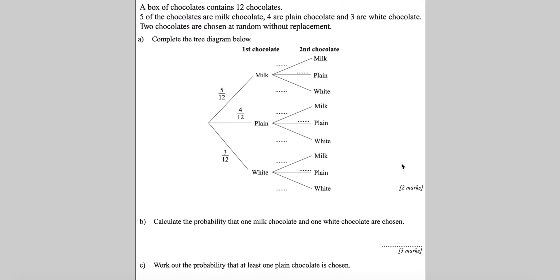Here are some further examples on tree diagrams using past paper questions. Most past paper questions only have two events with two options each, but I want to go a bit more advanced with two events where you have three options instead.